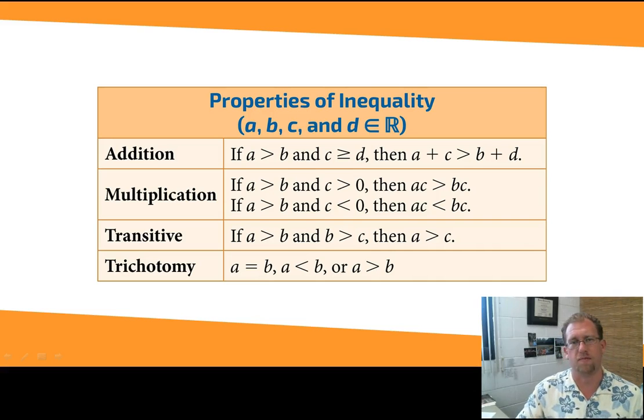Multiplication, same thing. You used to be able to multiply the same thing to both sides of an equality statement and have the equality still be true. That works with inequalities as long as you keep one little rule in mind. If you multiply by a number greater than 0, a positive number, then the direction of the inequality remains unchanged. But if you multiply by a negative number, you have to switch the direction of the inequality.